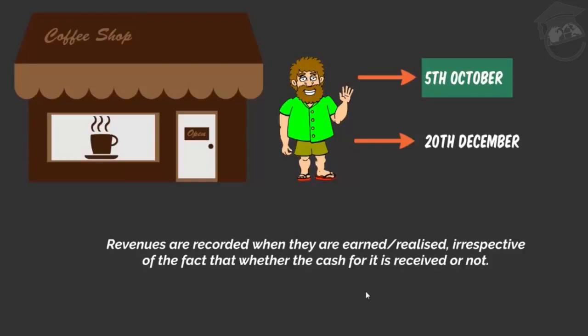The owner of goods or services will record the revenue as and when he provides the goods and services to his customer, irrespective of whether he has received the cash on that date. Similarly, if there is an advance payment by a customer, I will record the transaction when I have actually provided the services, not on the date when I received the advance payment.